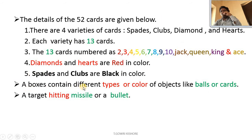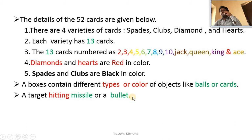A box contains different types of colored objects like balls or cars. Another example is a target-hitting missile or bullet.